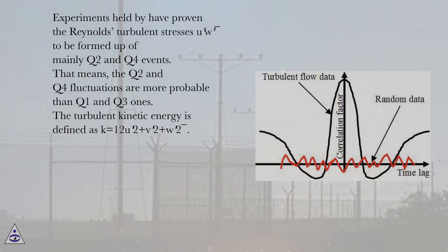The turbulent kinetic energy is defined as k = 1/2(u′² + v′² + w′²).